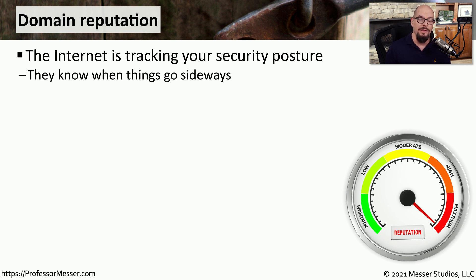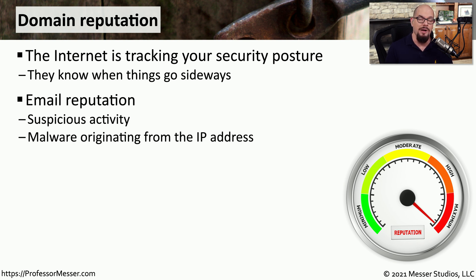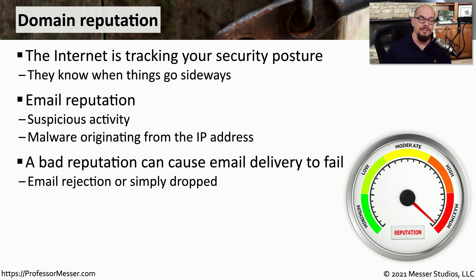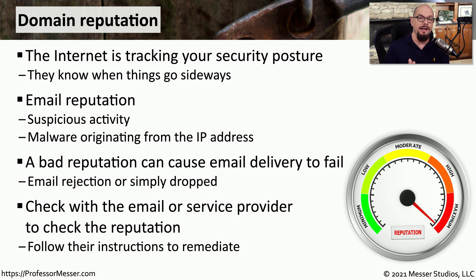Email reputation is determined by the type of email being sent from an organization and what users are clicking in their mail clients. If many people mark a particular type of email from a company as spam, that will affect the reputation and the ability for that company to send mail to others. A good example is if a company becomes infected with malware that sends spam using the company's email server — users will click 'this is spam,' and other companies will start limiting or restricting your ability to send emails to their users. There are many websites that can monitor the reputation of your email IP address so you can stop these problems before they become a significant issue.